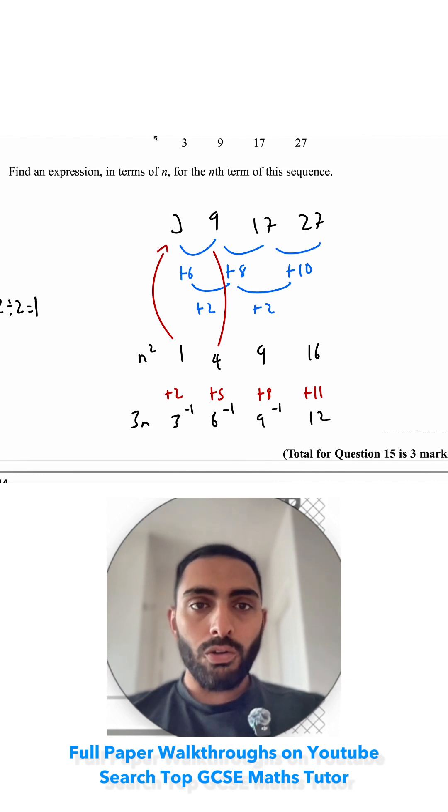So now I can combine all of these three things. So I've got n squared, 3n and this minus 1. I just combine all of them and I can write n squared plus 3n minus 1. I can check this. Let's say I want to check this 27. Because this is the fourth term, I would substitute 4 into here and I would get 27.